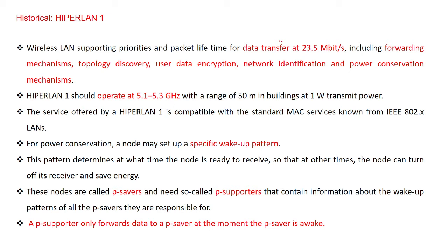HiperLAN supports a data transfer rate of 23.5 Mbps at a very high rate. It includes packet forwarding mechanisms and topology discovery, supporting star, bus, and ring topologies. Security is provided through user data encryption using a private key, implementing the Data Encryption Standard. It also includes network identification and power conservation mechanisms. HiperLAN 1 operates at a frequency of 5.1 to 5.3 GHz, at a range of 15 meters inside buildings, with a transmit power of 1 watt.